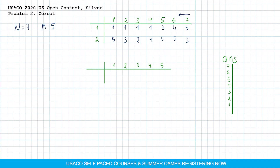When we start with cow number 7, she is going to select cereal type 5 because it is her first choice, and other cereal types are not going to be selected by anyone. So the answer for cow number 7 will be 1. Then we look at cow number 6, whose first choice is cereal type 4. This cereal type is not chosen by anyone, so we are just going to assign cereal 4 to cow 6, and the answer for cow 6 will be 2.